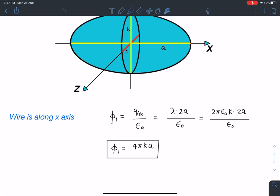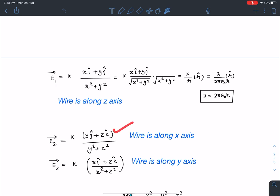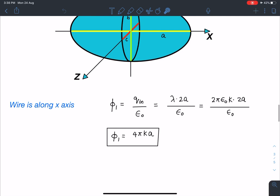So on simplifying this epsilon 0 get cancelled and this phi 1 comes as 4 pi ka. So this is the result due to the wire which is placed along x axis and this is creating a field k times yi plus yj plus zk cap divided by y square plus z square. So this is the wire which is placed along x axis and the flux passing through the ellipsoid is 4 pi ka.